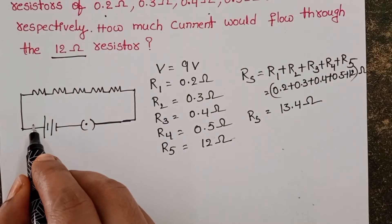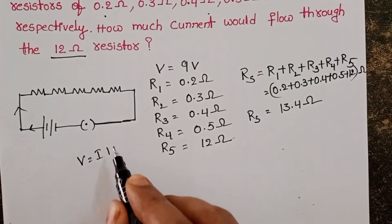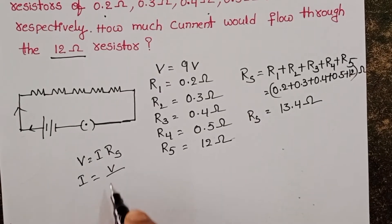Now to calculate the total current in the circuit, we use Ohm's law. V equals I times R, or I equals V divided by R.